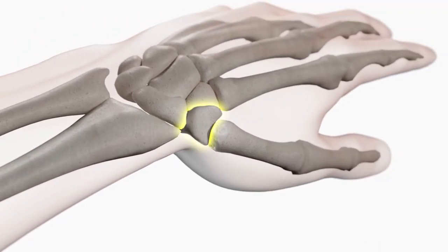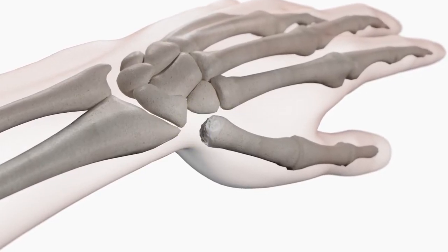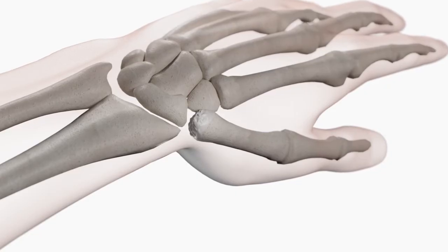Traditional surgical procedures treat the condition by removing the trapezium bone at the base of the thumb. While effective at providing pain relief, over time the thumb may move down, shortening the thumb.